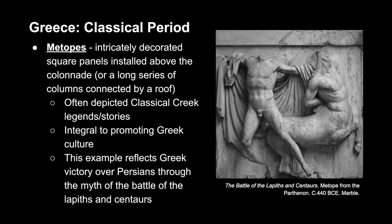Metopes were featured on the Parthenon as well — intricately decorated square panels installed above the colonnade, which is a long series of columns connected by a roof. They often depicted classical Greek legends and stories, integral to promoting Greek culture. This example depicts the Battle of the Lapiths and the Centaurs, which functioned as a metaphor for the Greek victory over the Persians. This is actually where the funding for the building came from, because they had so much money left over after their win.